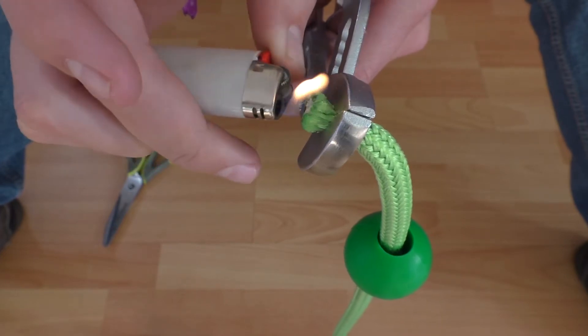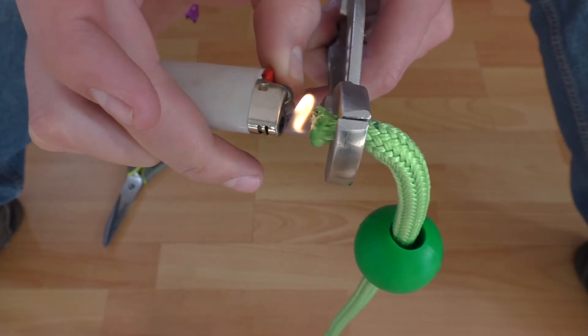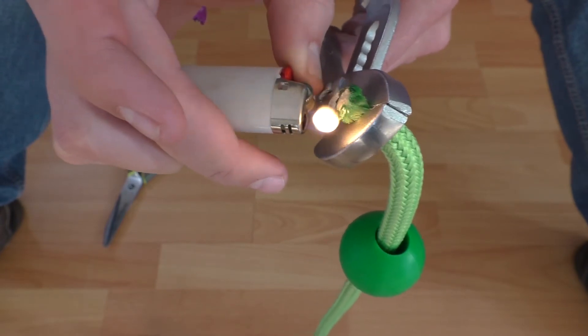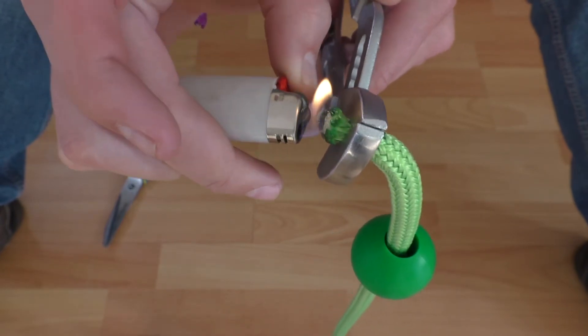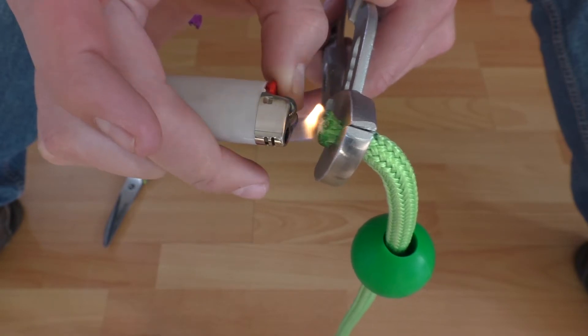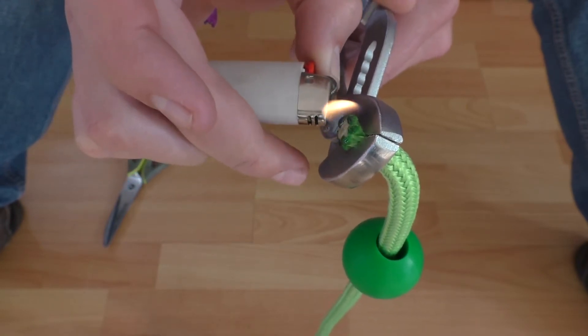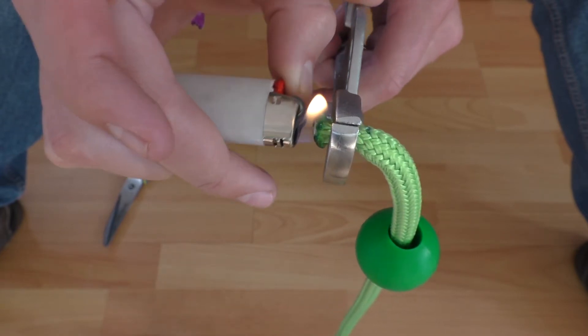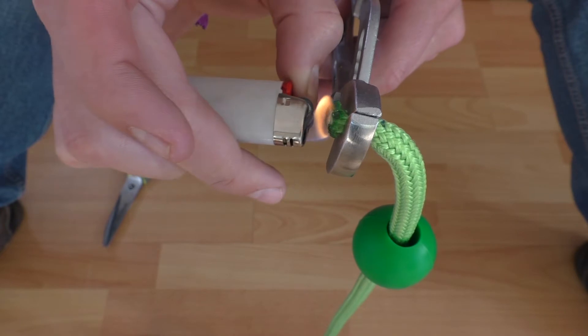And you're going to want to make everything nice and melted so that there's no fibers. So go around on the edges, go in the middle, and then you can really just give it a good burn because you want to have a nice thick cap.